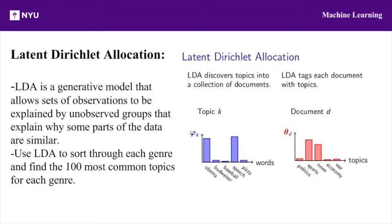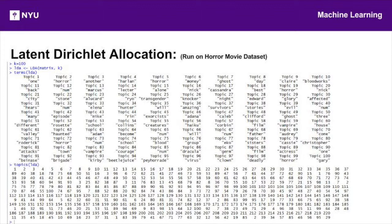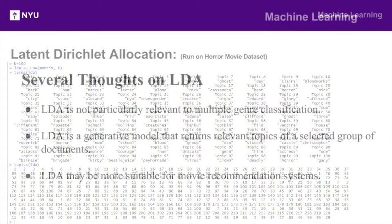Finally, we were free to run LDA on the synopsis pool of each genre. For our topic generation, we set the K value at 100, so we basically use LDA to sort through each genre and find the 100 most common topics for each genre. This is the output of LDA on the horror dataset — it prints out all 100 topics, and also prints out the index of each document synopsis in the horror dataset and which topic it is most closely related to.